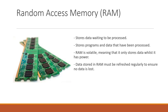RAM is classed as volatile, which means that as soon as it loses power, such as when the computer is switched off, then the data which is stored in it will be lost, unless it is saved to a secondary storage device first. When the computer is on, the data is held in RAM and has to be refreshed regularly so that it is not lost.